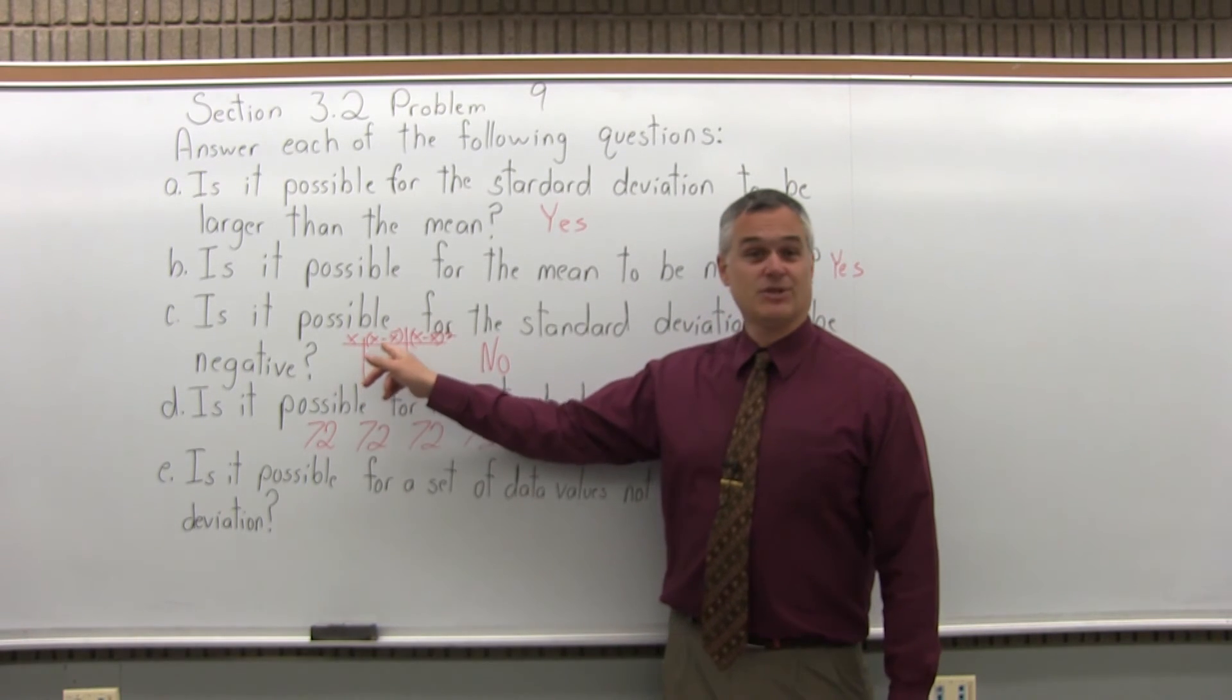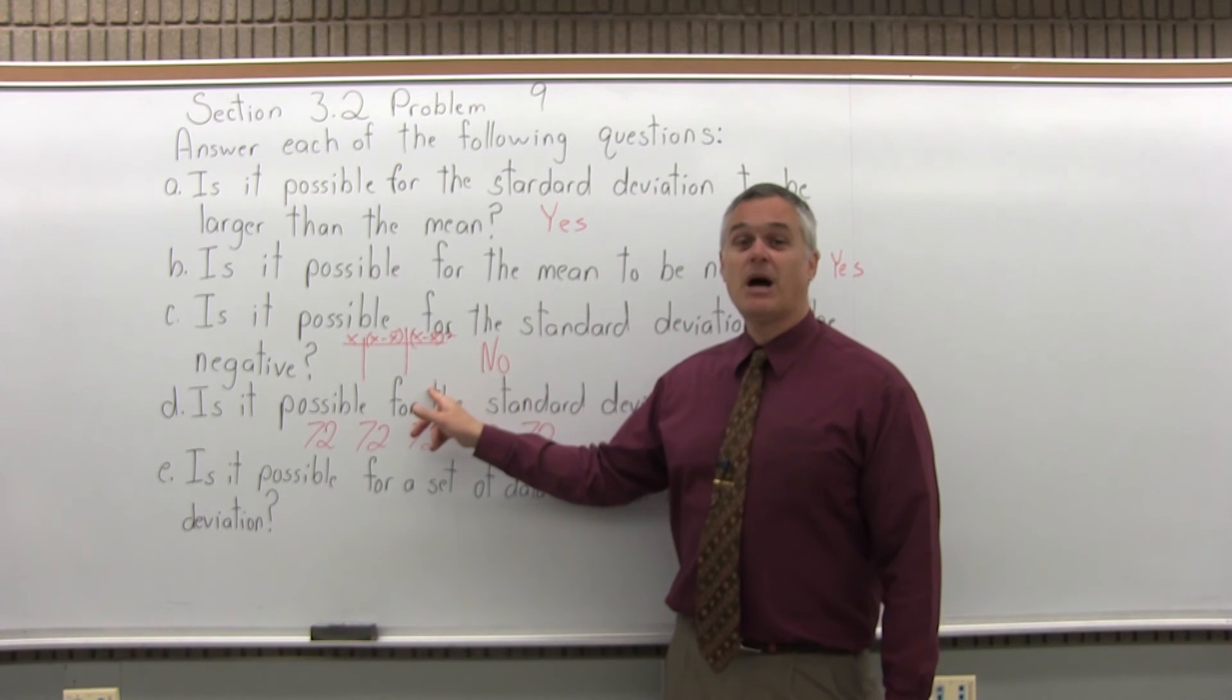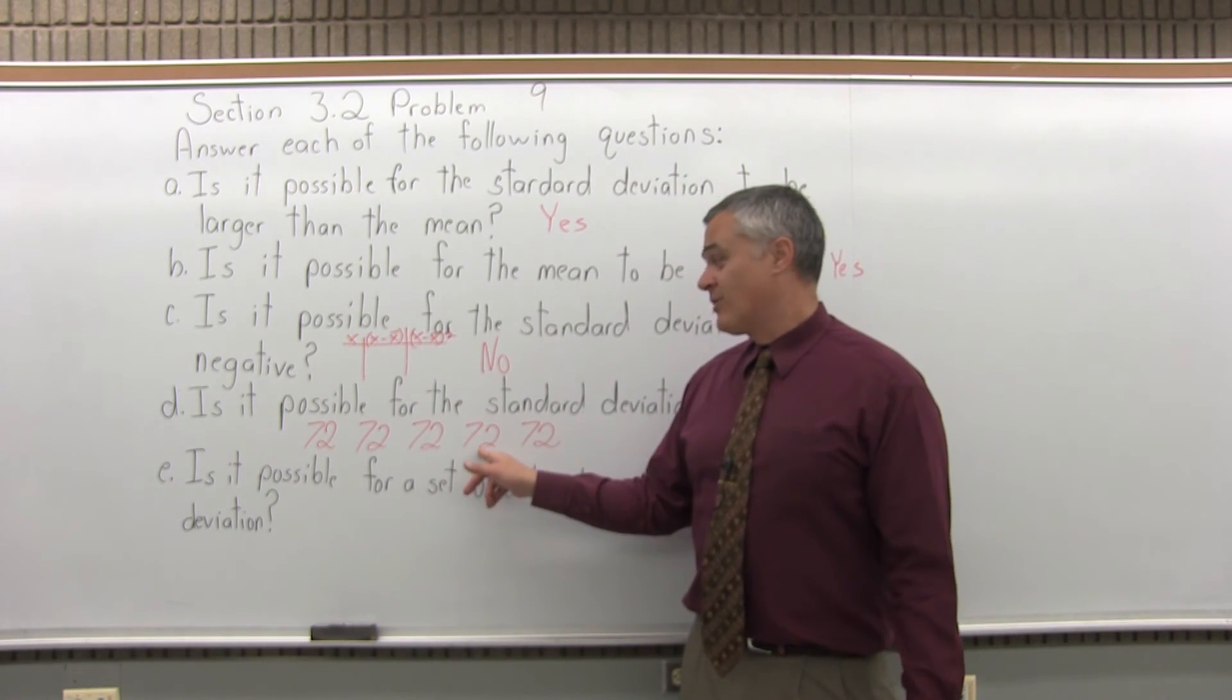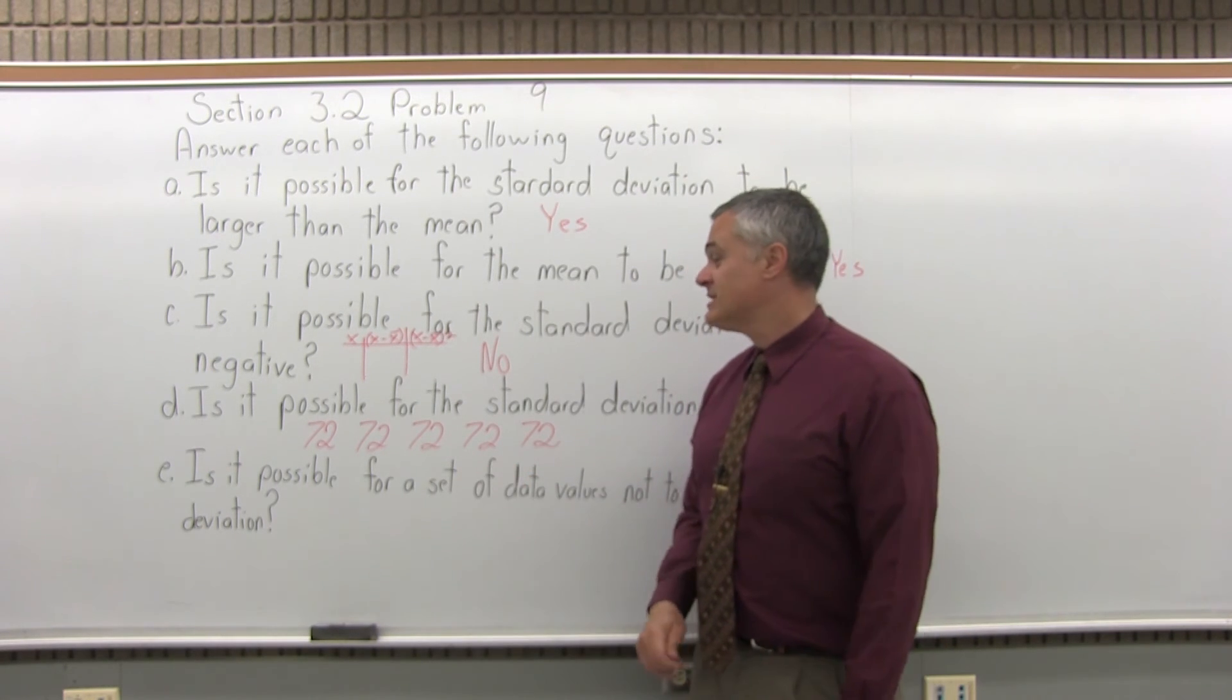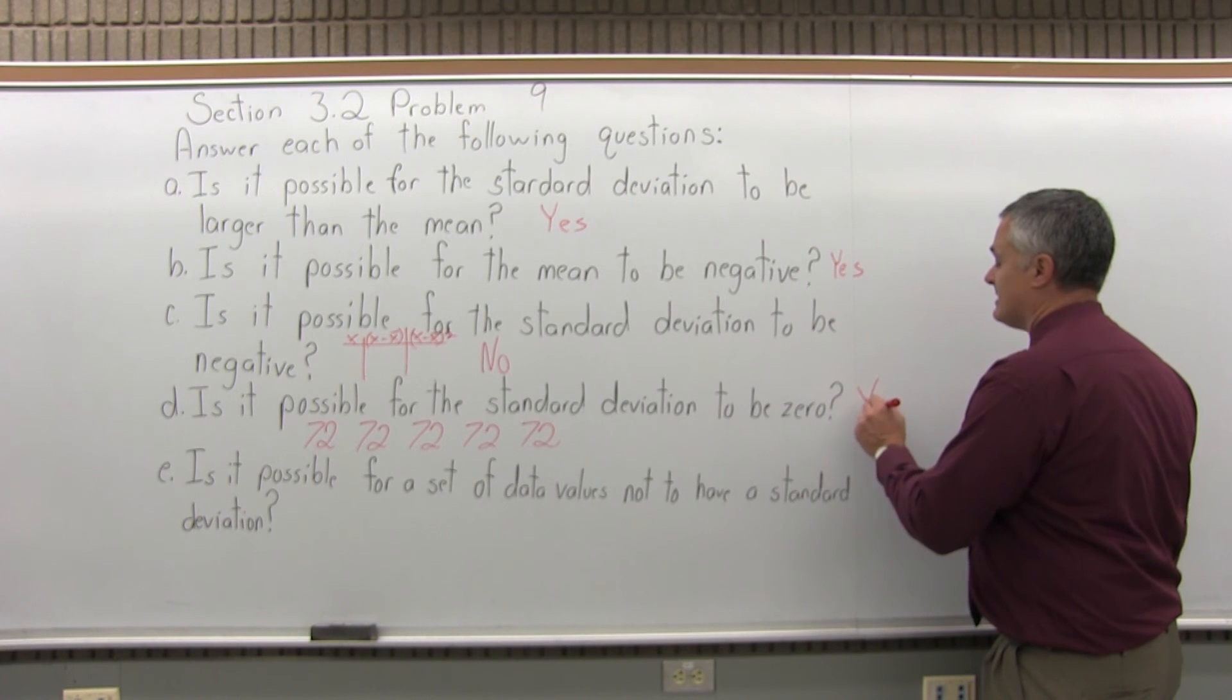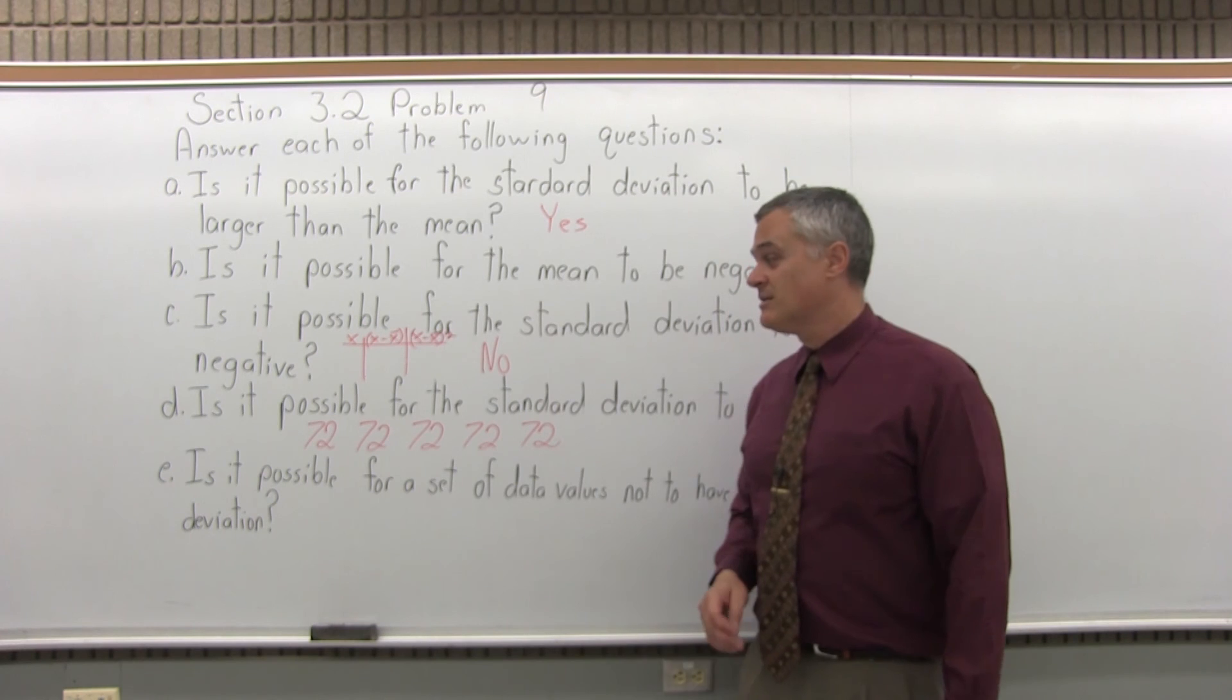In every row, you'd have 72 minus 72, which is zero. You'd raise each zero to the second power. Come out to zero. Total up, divide by four or five, be zero. So you can have a standard deviation of zero. The answer to this is yes. And what that means is you have the same data value repeated many times, whether it's 72 or something else.